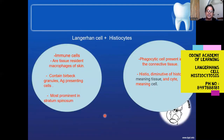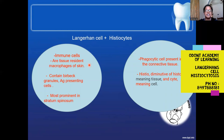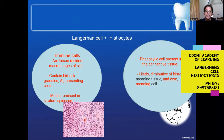Langerhans cells are immune cells present within the tissue — they are tissue-resident macrophages of the skin and function as antigen-presenting cells. The CD1A antigen is present on their surface. Under electron microscope, you can see granules termed Birbeck granules, which are a typical feature of the Langerhans cell. Within the epithelium, these cells are more prominent in the stratum spinosum.